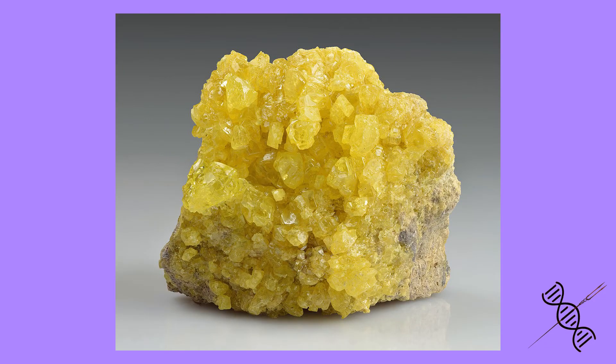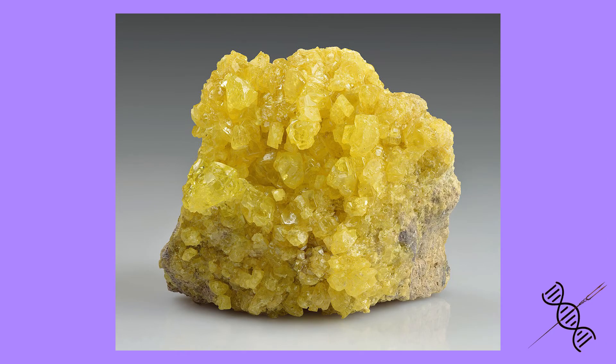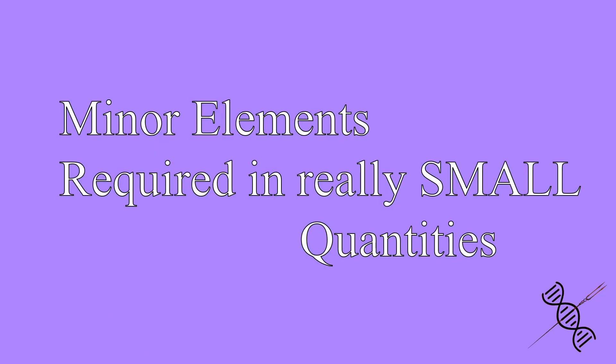Sulfur, like calcium and phosphorus, also promotes plant root development. Main sources of sulfur in plant medium are sulfates. There are also some minor elements that are required in extremely small quantities, even though their deficiency in medium might cause some complications. Chlorine, boron, copper, iron, magnesium, molybdenum, and zinc are all minor elements occurring in the medium, which we aren't going to discuss here for the sake of simplicity.